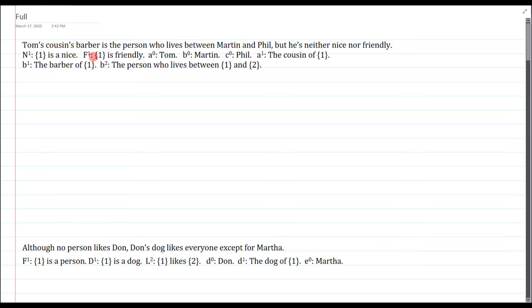So this says Tom's cousin's barber is the person who lives between Martin and Phil but he's neither nice nor friendly. So it's pretty easy to see that we just have a couple big operations here, the person who lives between Martha and Phil. And so here this is equating two individuals together because each time you have an operation it picks out a single person so that's got to be equality.